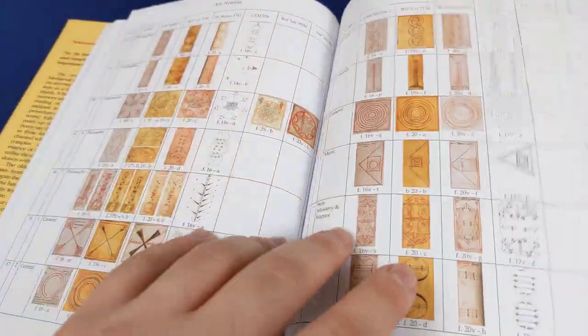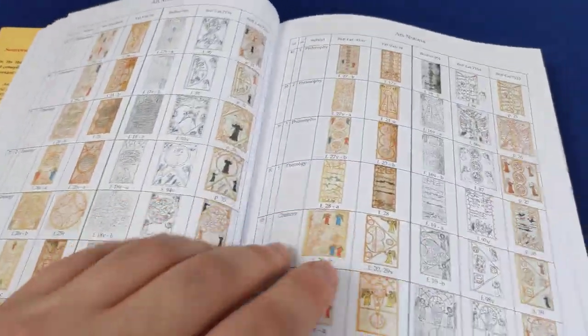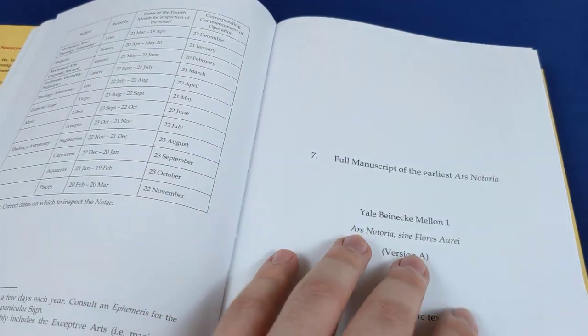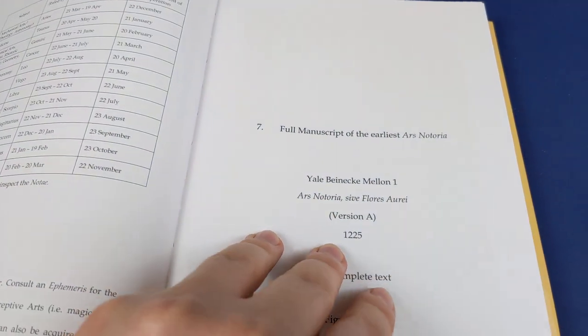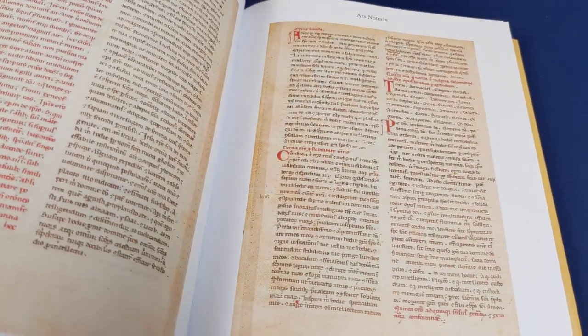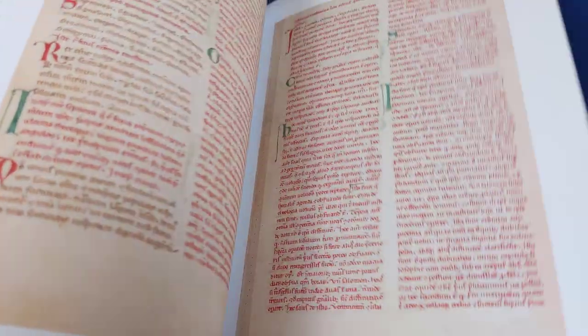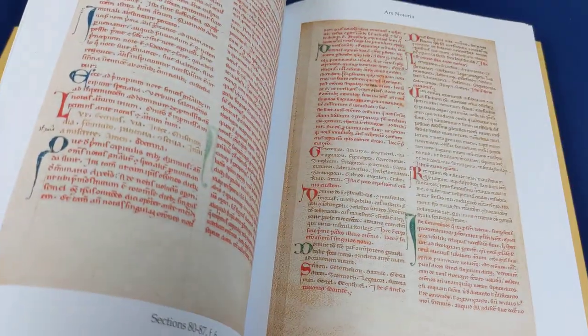He also goes into quite a lot of detail showing the differences between the different manuscripts, what is in some manuscripts and absent from others. It's extraordinary. And then you get into the actual manuscript. So this is the earliest version of the Ars Notoria, which you get a full facsimile of right there.